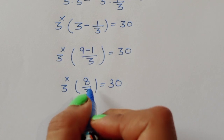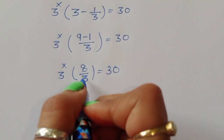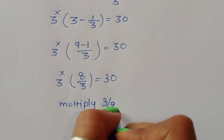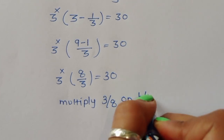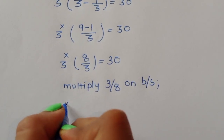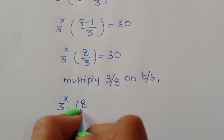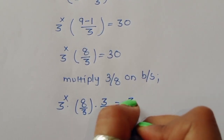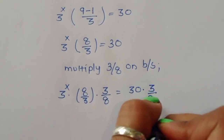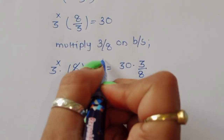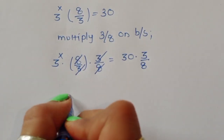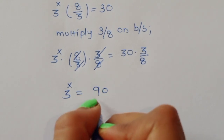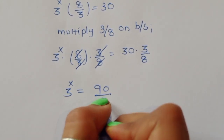Now we cancel the 8/3 by multiplying both sides by 3/8. After cancellation, 3^x equals 30 times 3/8, which is 90/8. Dividing both numerator and denominator by 2, we get 3^x equals 45/4.